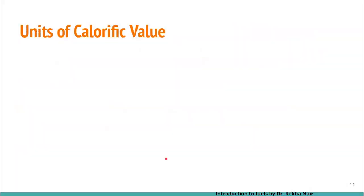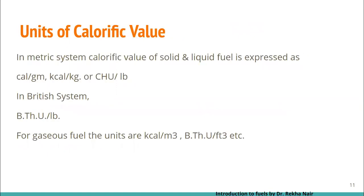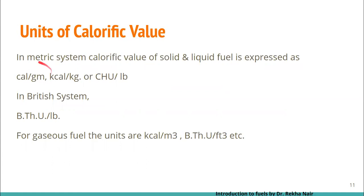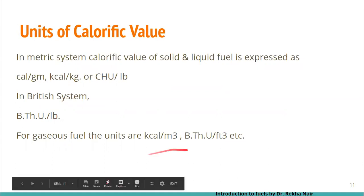Next are the units of calorific value. For solid and liquid fuels, in the metric system we have calories per gram, kilocalories per kg, or CHU per pound. In the British system we have BTU per pound. For gaseous fuels, we have units like kilocalories per cubic meter, BTU per cubic feet, etc.